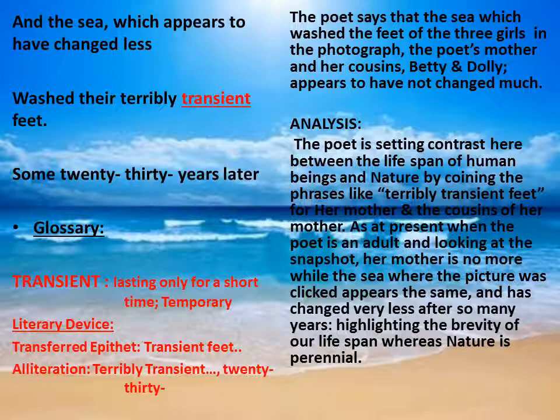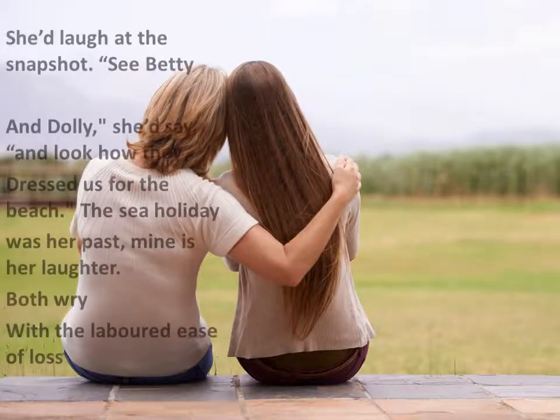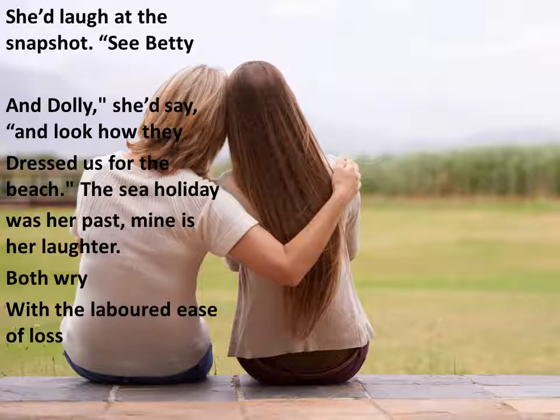In the analysis, the poet sets a contrast between the lifespan of human beings and nature, coining phrases like 'terribly transient feet' for her mother and cousins. The poet shows how brief a lifespan is compared to nature: as the poet stands as an adult looking at the snapshot, her mother is no more, while the sea where the picture was clicked appears the same and has changed very little after so many years. This highlights the brevity of our lifespan, whereas nature is perennial.